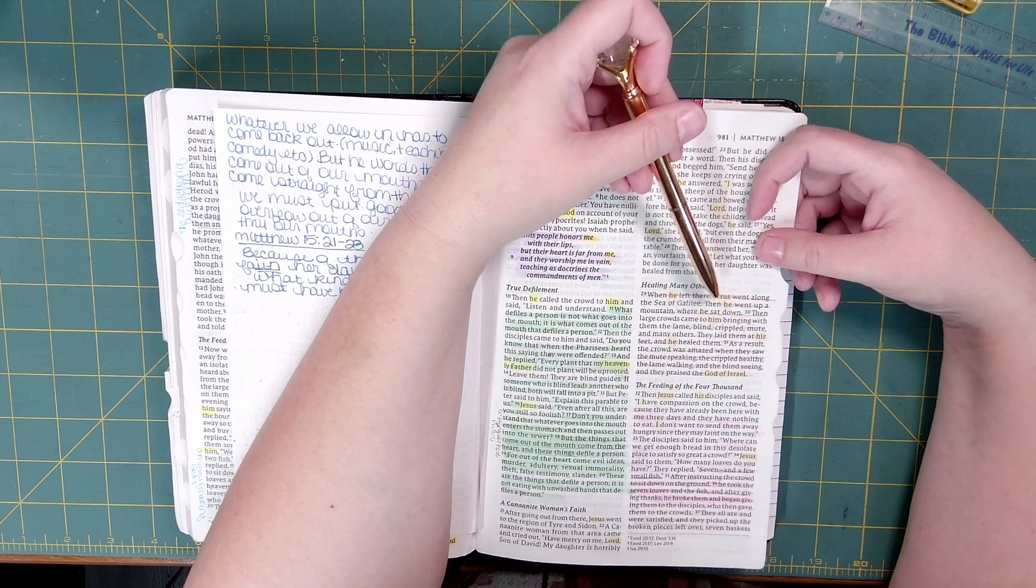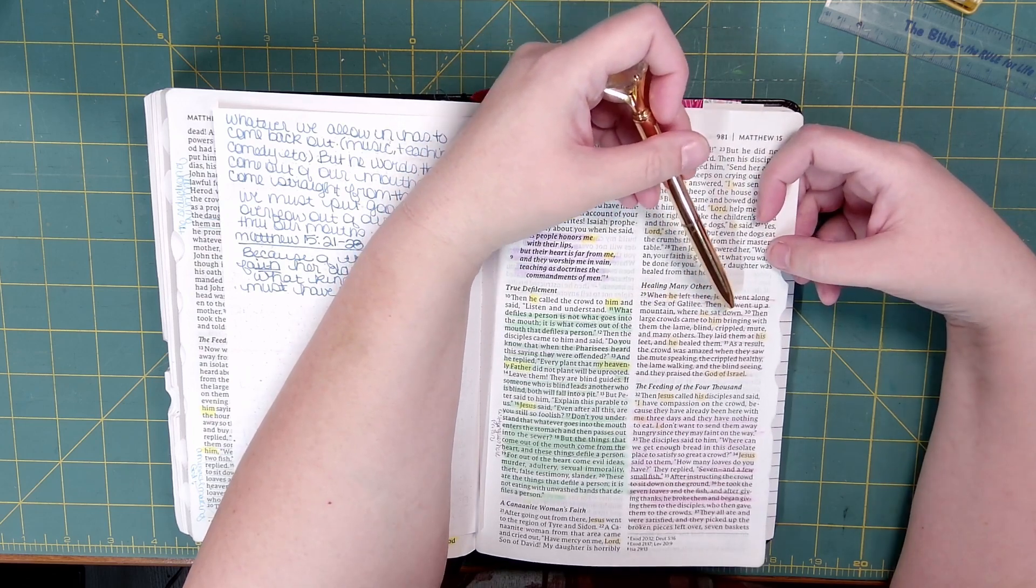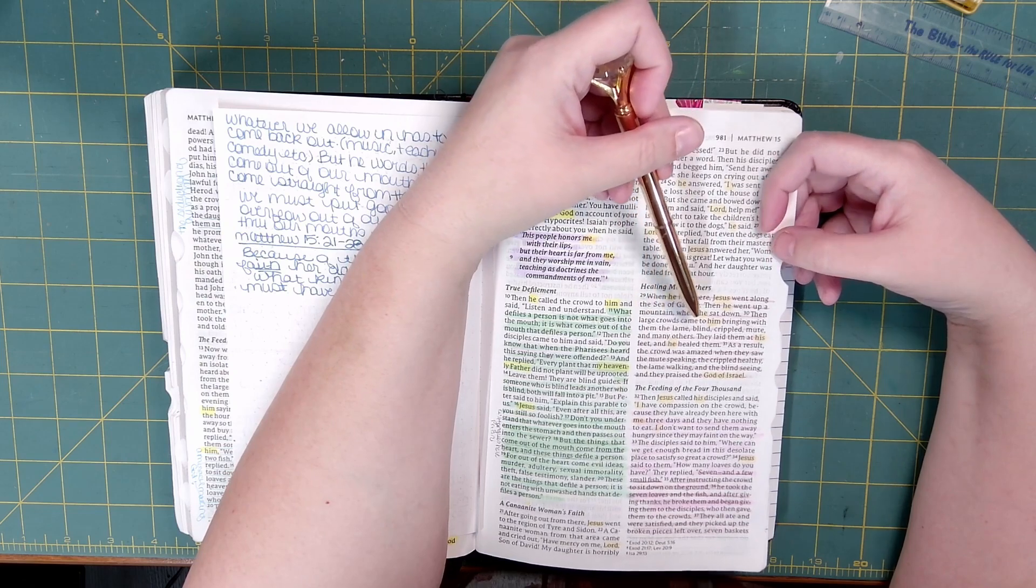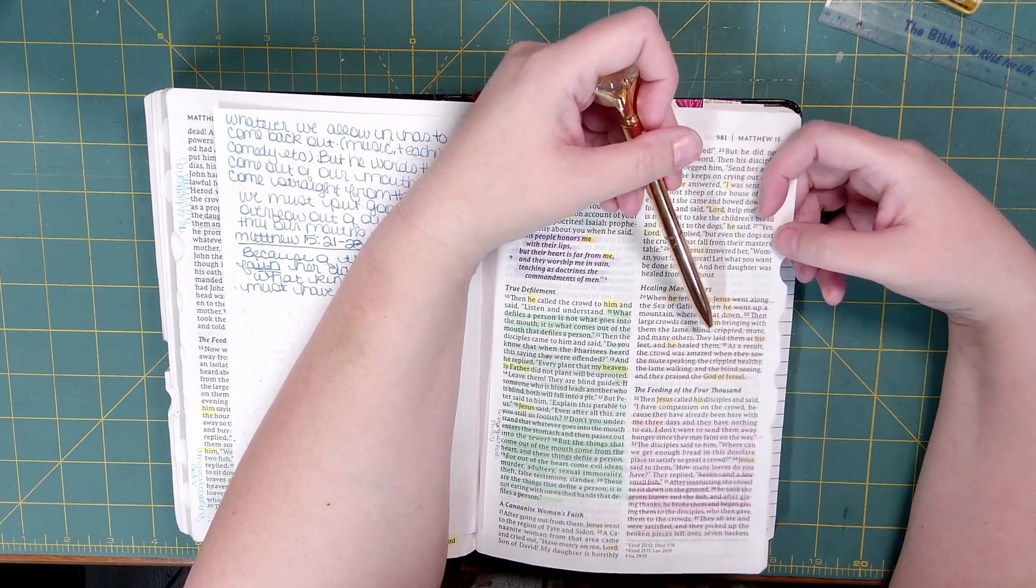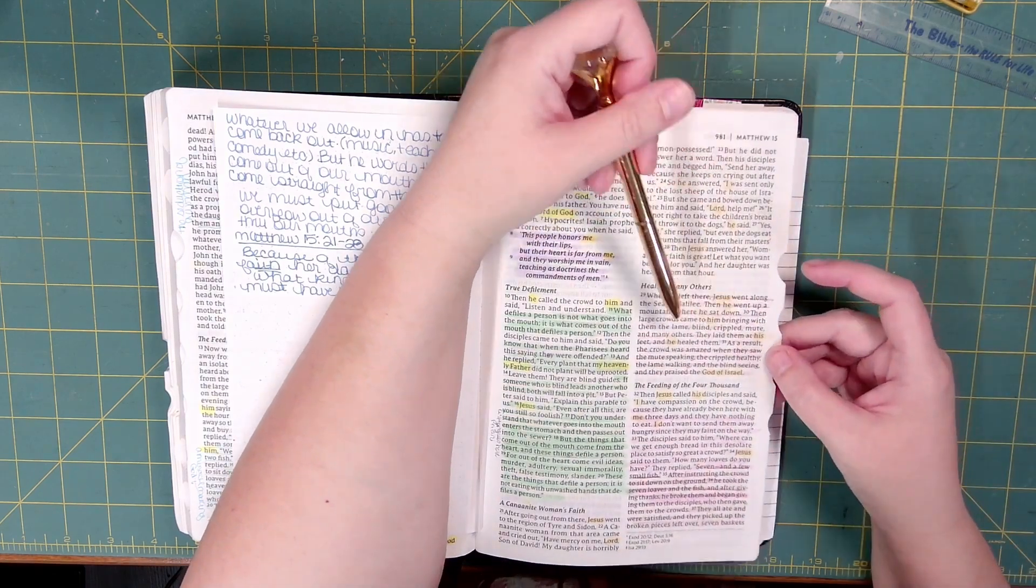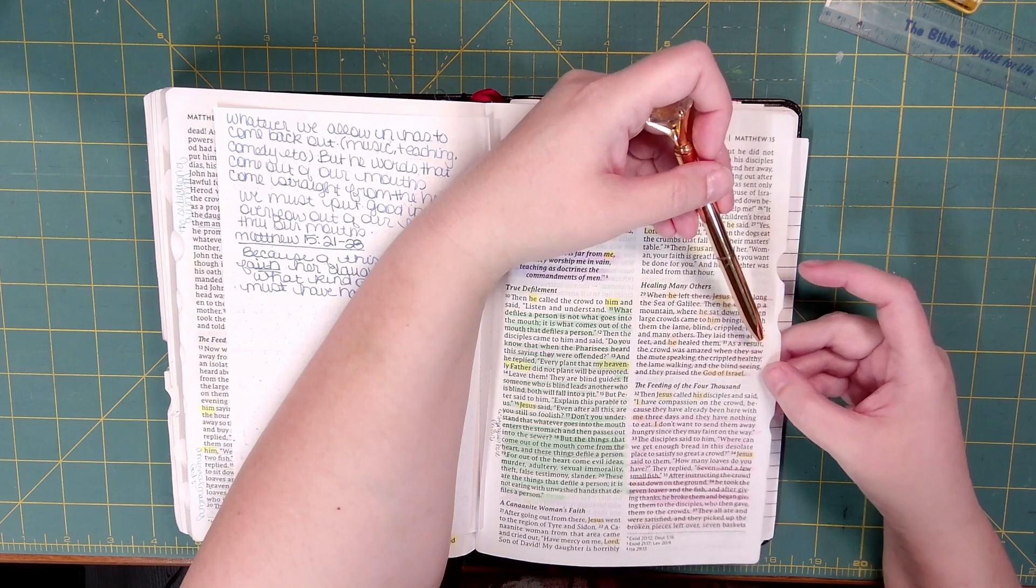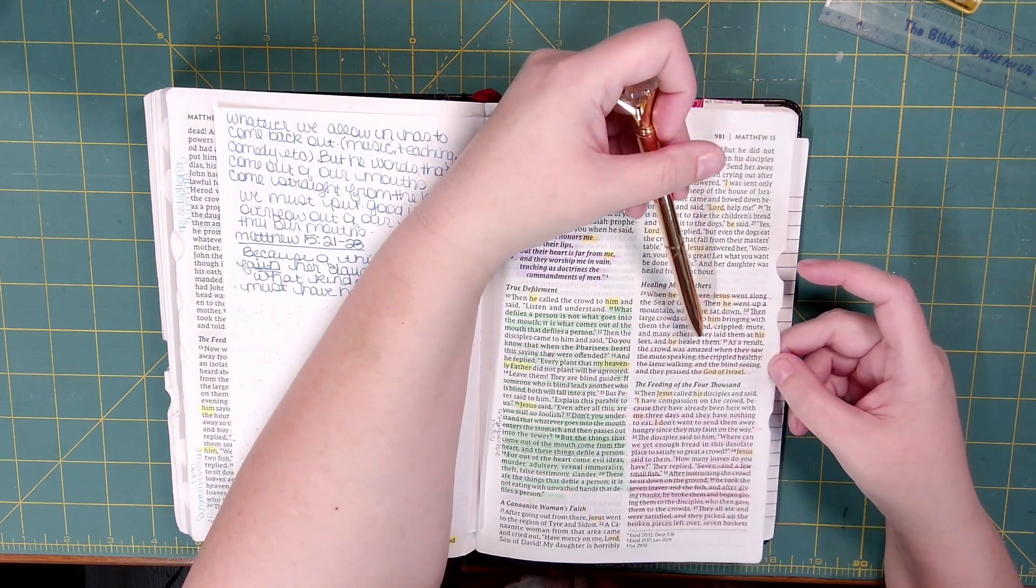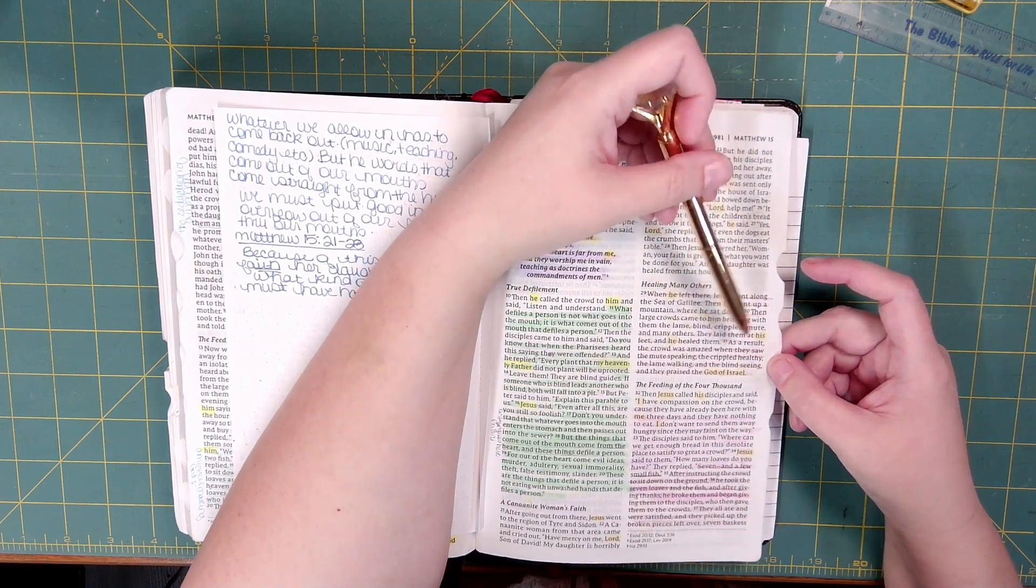When he left there, Jesus went along the Sea of Galilee. Then he went up a mountain where he sat down. Then large crowds came to him, bringing with them the lame, blind, crippled, mute, and many others. They laid them at his feet, and he healed them.